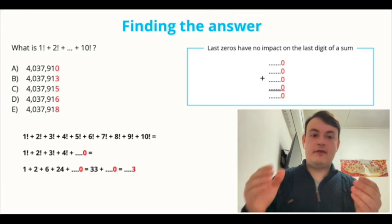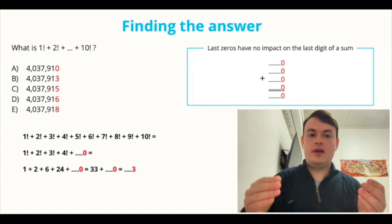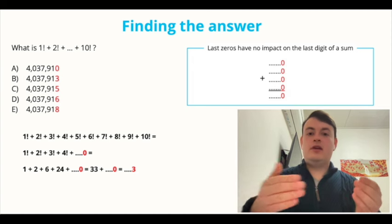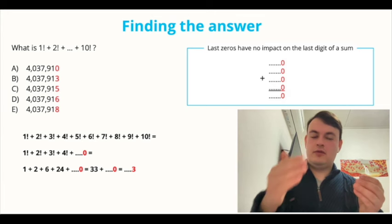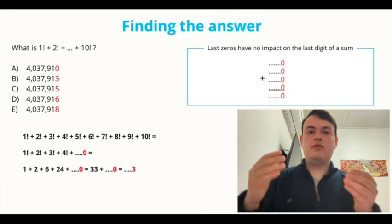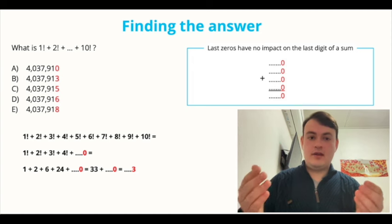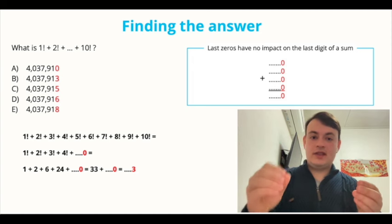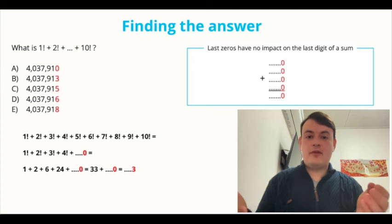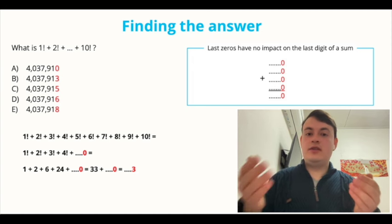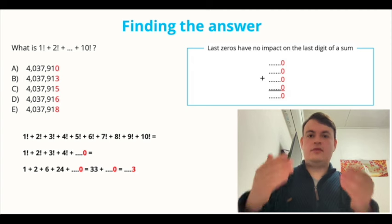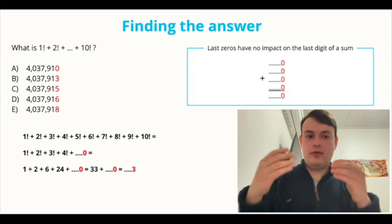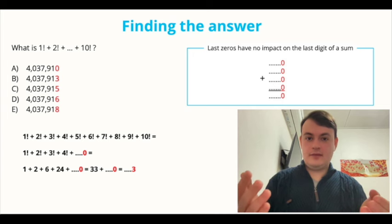Therefore, we just have to calculate the sum of factorials from 1 to 4. Well, this is quite easy. The sum equals to 1 plus 2 plus 6 plus 24. The answer is 33. And the last digit of this sum equals to the last digit of our answer. The last digit of 33 is 3. The last digit of our answer is also 3. Therefore, B here is correct.